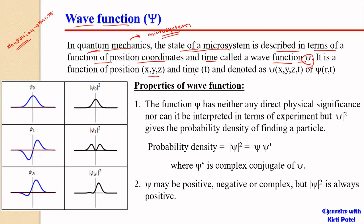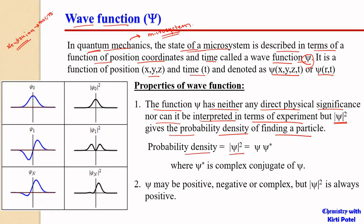This wave function describes every property related to the microsystem, to that particle. Whatever properties we need to extract from that particle, we can extract it through this wave function ψ. It is dependent on the position coordinates x, y, z as well as the time coordinate t. It is a function of position coordinates x, y, z and time t, and is denoted as ψ(x, y, z, t) or simply ψ(r, t). The wave function ψ has neither any direct physical significance nor can it be interpreted in terms of any experiment. But ψ² or the modulus of ψ² gives the probability density of finding a particle.